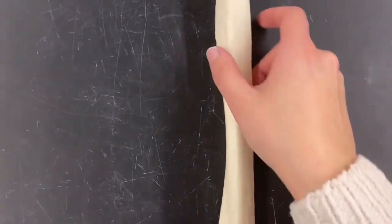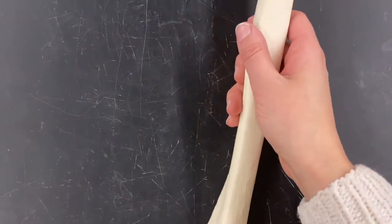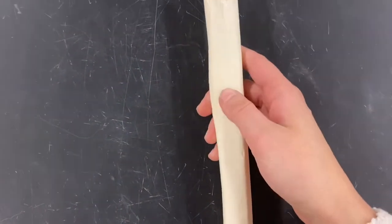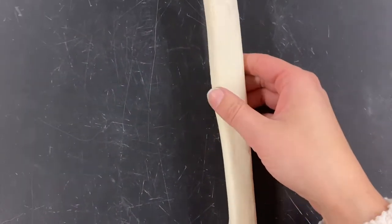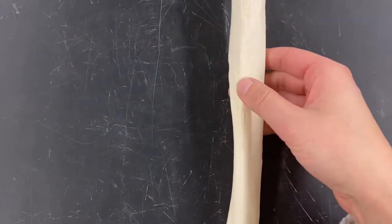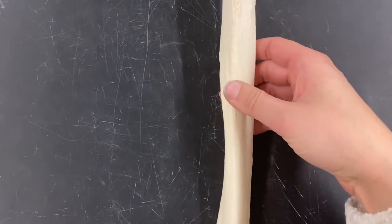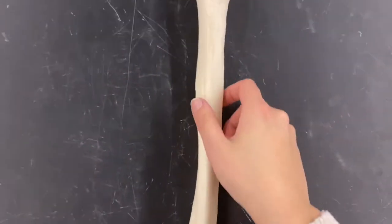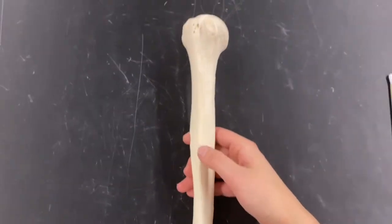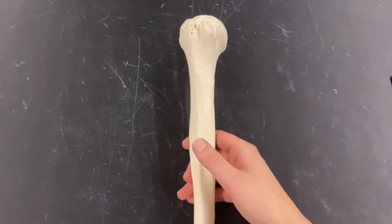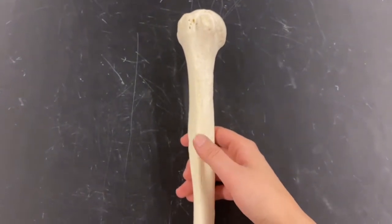If you move down the bone medially, there's a rough region that juts out, and that is known as your deltoid tuberosity.